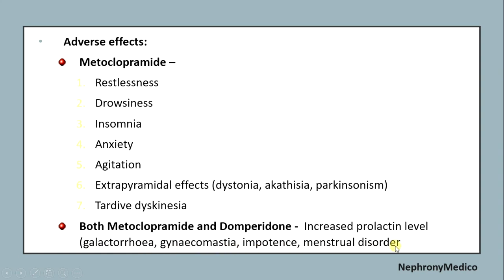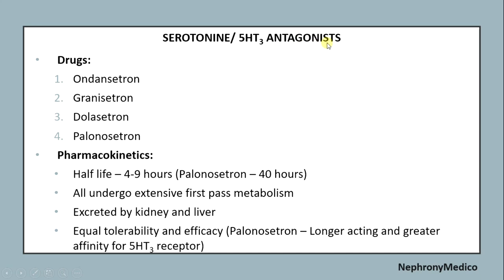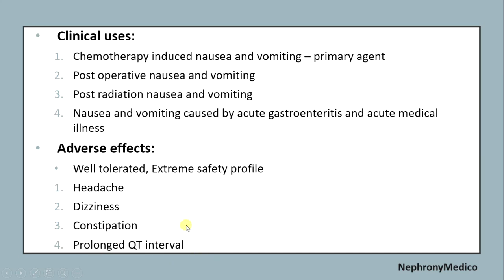Serotonin or 5-HT3 antagonists include ondansetron, granisetron, dolasetron, and palonosetron. Pharmacokinetics: half-life is 4 to 9 hours, while palonosetron has a half-life of 40 hours. All undergo hepatic metabolism and are excreted by the liver and kidneys with equal tolerability and efficacy. Palonosetron is longer-acting with greater affinity for the 5-HT3 receptor. Clinical uses include chemotherapy-induced nausea and vomiting, post-operative nausea and vomiting, and post-radiation nausea and vomiting, as well as nausea caused by acute gastroenteritis and acute medical illness.